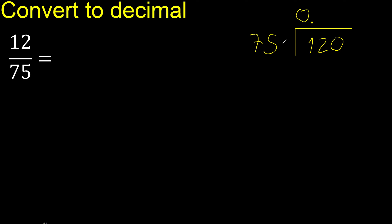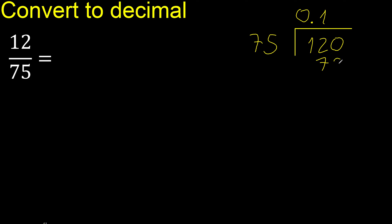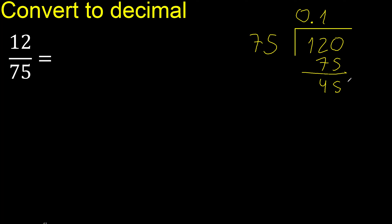120 is not less. 75 multiply by which number is nearest to 120 but not greater? Multiply by 2 is 150 — is greater. Multiply by 1 is 75. Subtract: 45. There is no number that goes down, therefore complete with 0. Point is here — point only once.